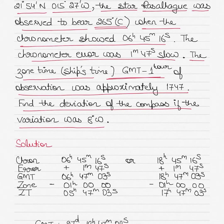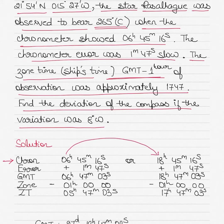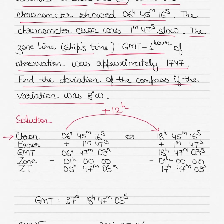Before solving the question, we must resolve the ambiguity in the chronometer time. The chronometer time given is 6h 45m 16s. Write it down, then write the other possibility: add 12 hours, giving 18h 45m 16s. So it could be 6 in the morning or 6 in the evening. We'll determine the correct one from the hint in the question. Next, apply the chronometer error.